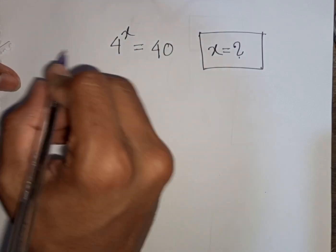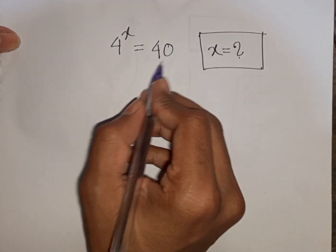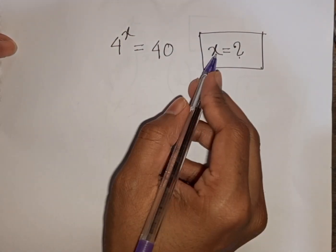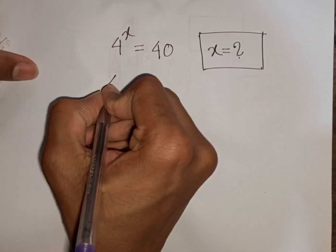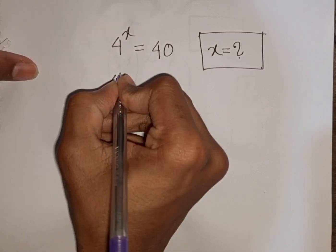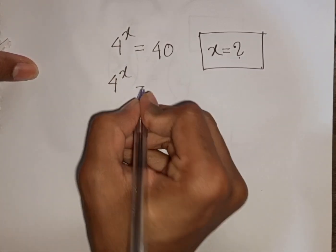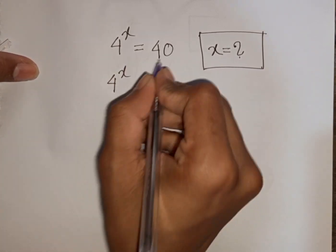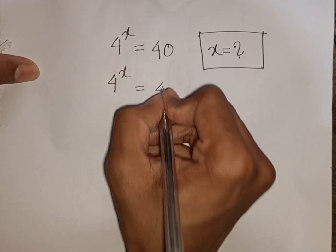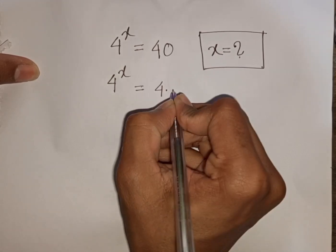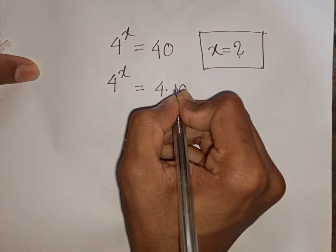How to solve 4 power x is equal to 40. Find the value of x. We have 4 power x is equal to 40, which can be written as 4 times 10.